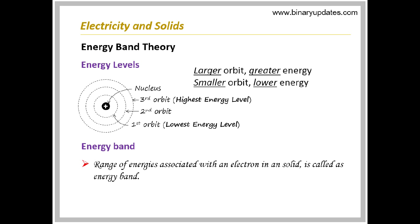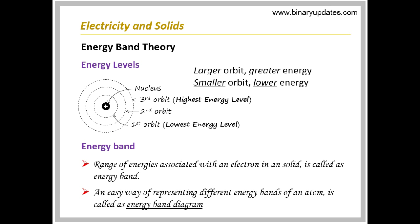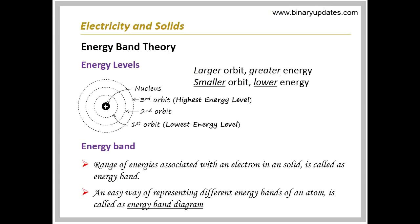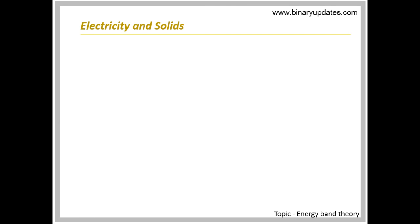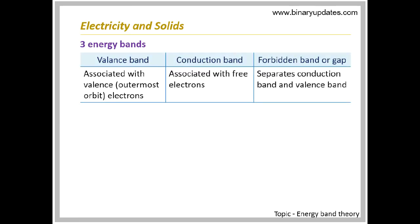Hence, an atom has a range of energies that are represented as a single entity called an energy band. Energy band can also be defined as the range of energies associated with an electron in an atom of a solid. To represent energy levels in an atom, a diagram called the energy band diagram is used. Out of many energy bands, the most important are the valence band, conduction band, and forbidden band or forbidden gap.